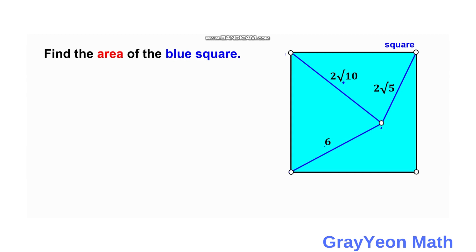For this problem we are using coordinate geometry with the Pythagorean theorem. We can label the bottom-left corner as (0, 0) and let the side of the square be a. So the corners are: bottom-left (0,0), bottom-right (a,0), top-left (0,a), and top-right (a,a). The interior point will be labeled (x, y).